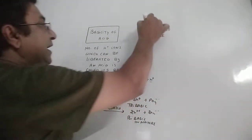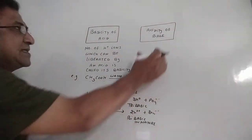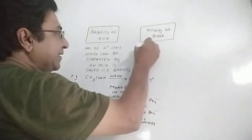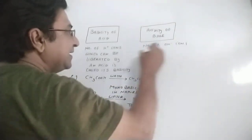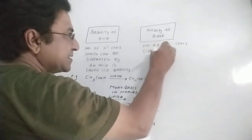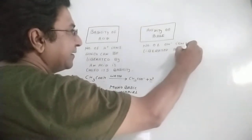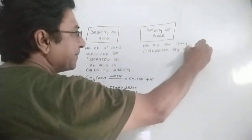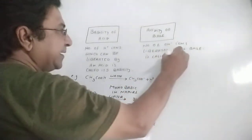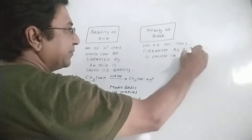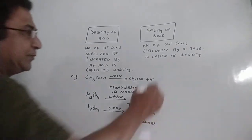Now let's move to the acidity of a base — a very small but very important topic. The acidity of a base means the number of hydroxyl ions liberated — not just present, but actually liberated — by a base.